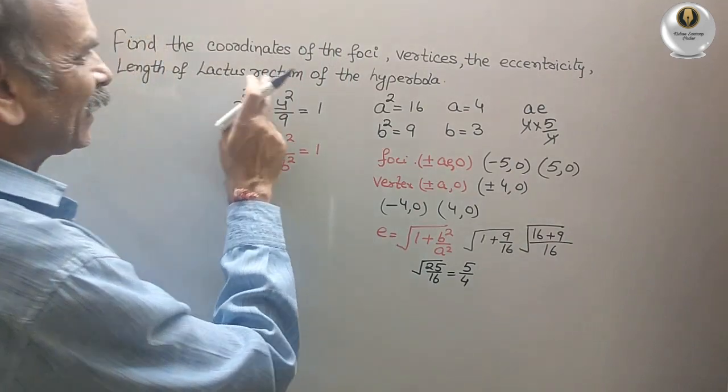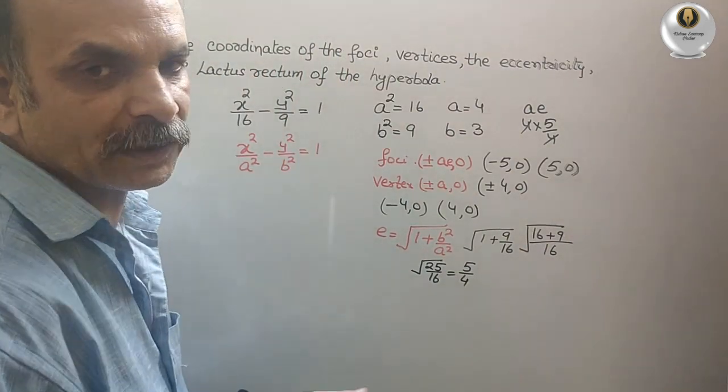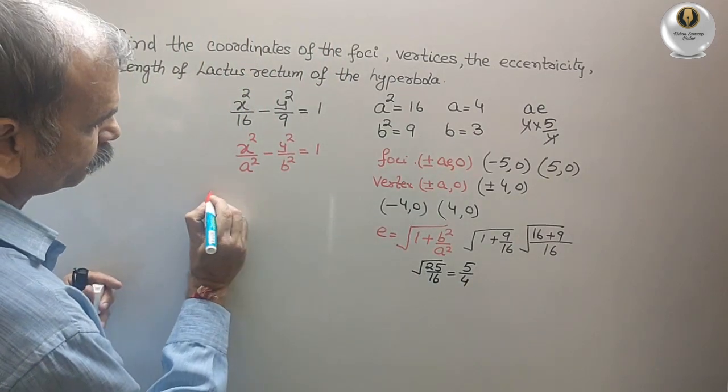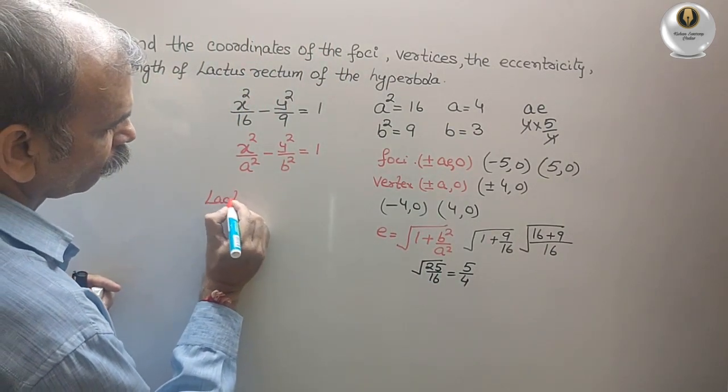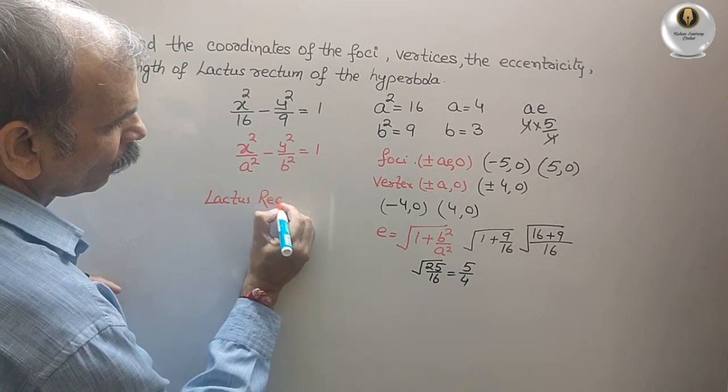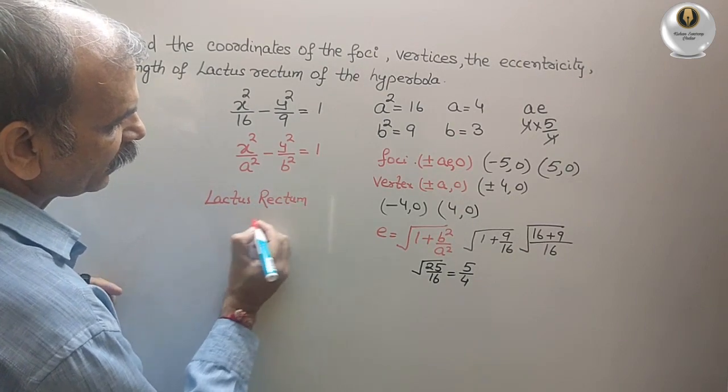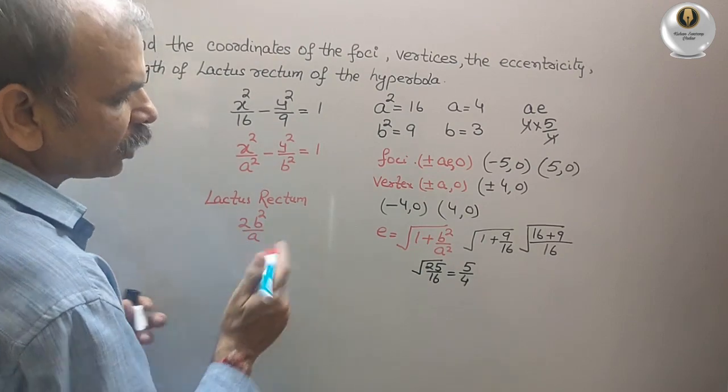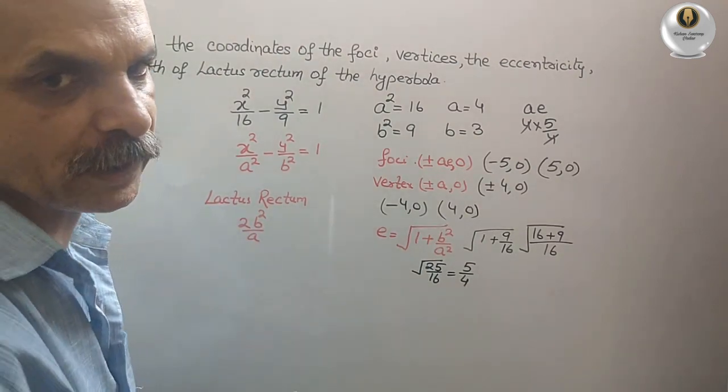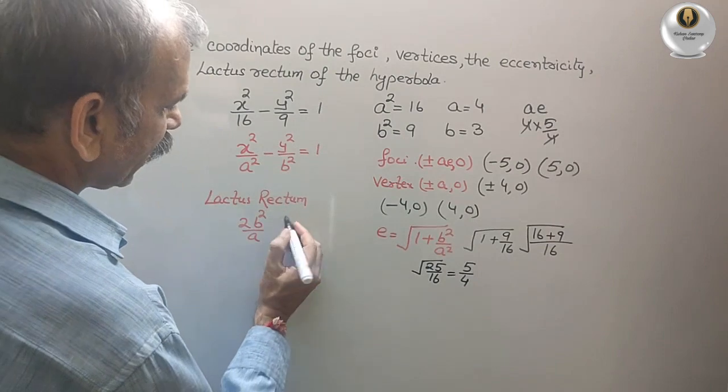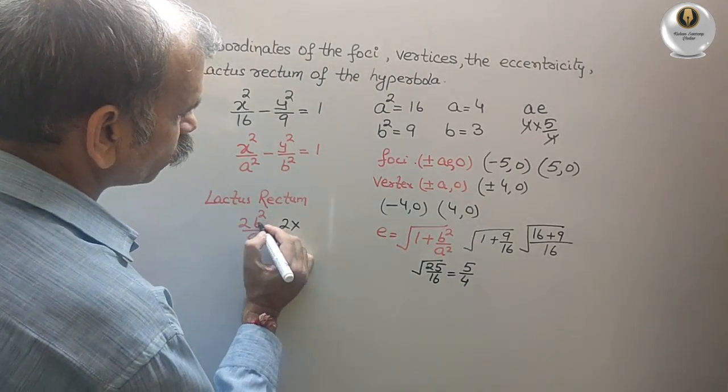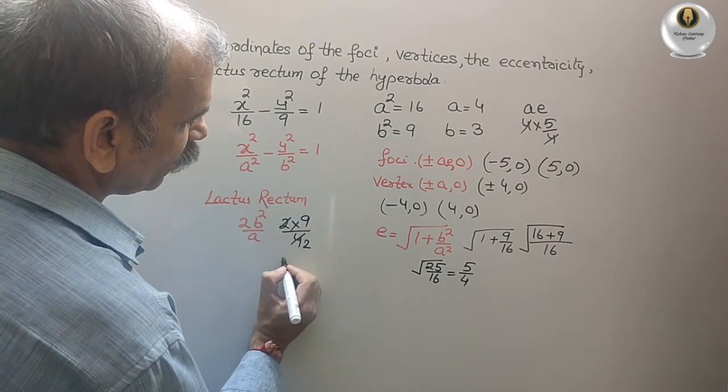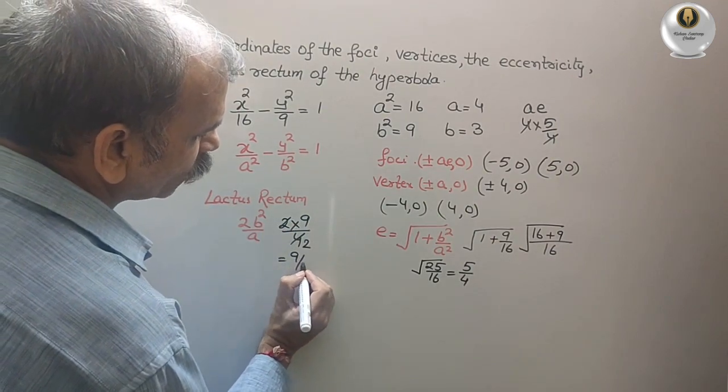Next comes your latus rectum. What is that? That we will write latus rectum. That is 2B square by A. Substitute the value. See that what we will get. We will get 2 into B square is 9. By 4. Just cutting. So here we will get 9 by 2.